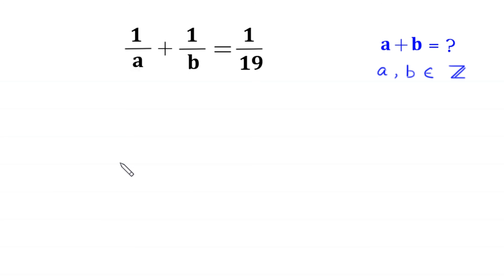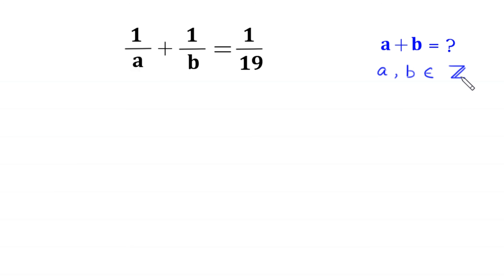Hello everyone, you are welcome to how to solve this very nice Diophantine equation: 1 over a plus 1 over b is equal to 1 over 19. Our job is to find all possible values of a plus b, such that a and b are integers. So let's start.